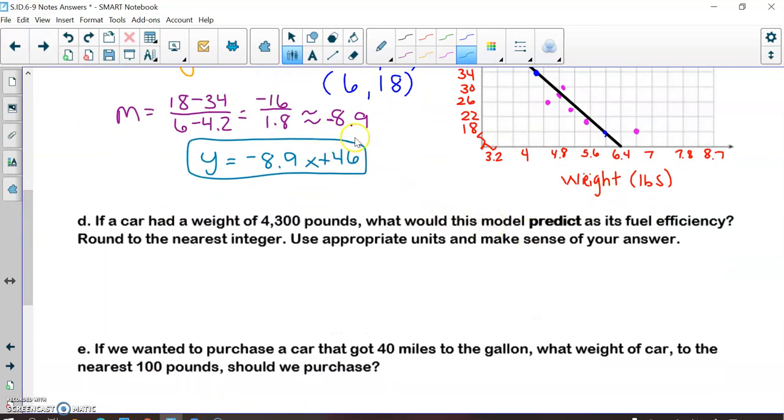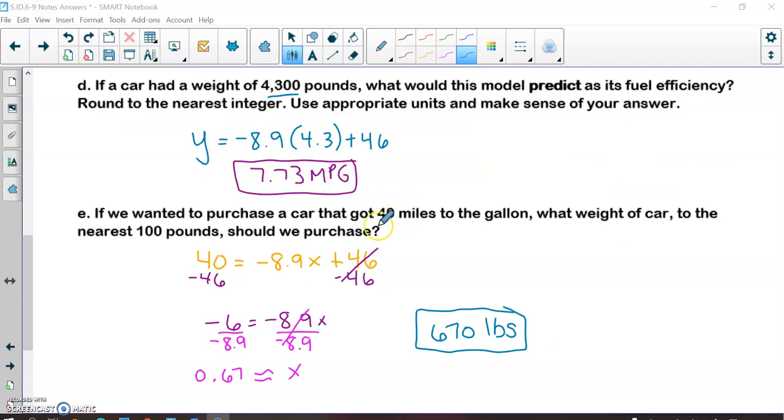Okay, so this would be a good estimate of what the equation would be. Now we want to use the model, which is this equation here, to predict what the fuel efficiency would be if we had a car that had a weight of 4,300 pounds. Now that would mean that we have 4.3 in our equation. So I'm going to substitute that in. And this is what we get.